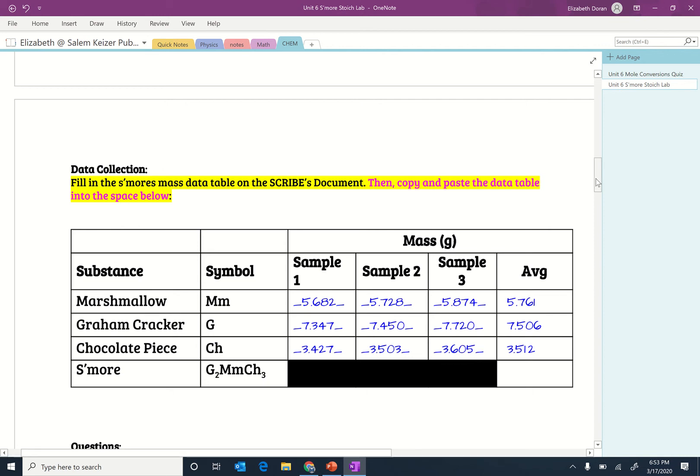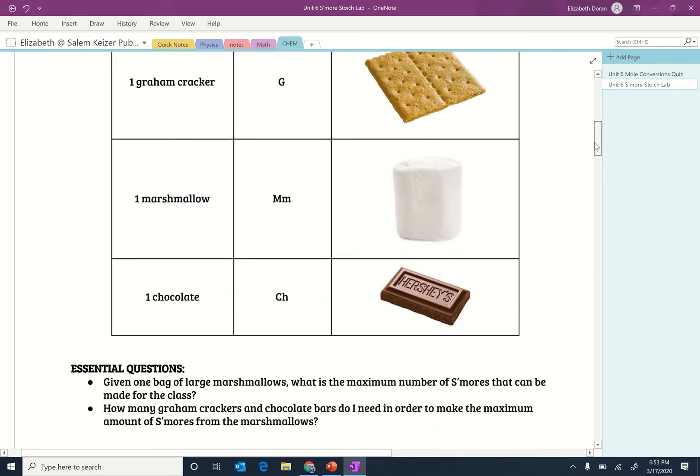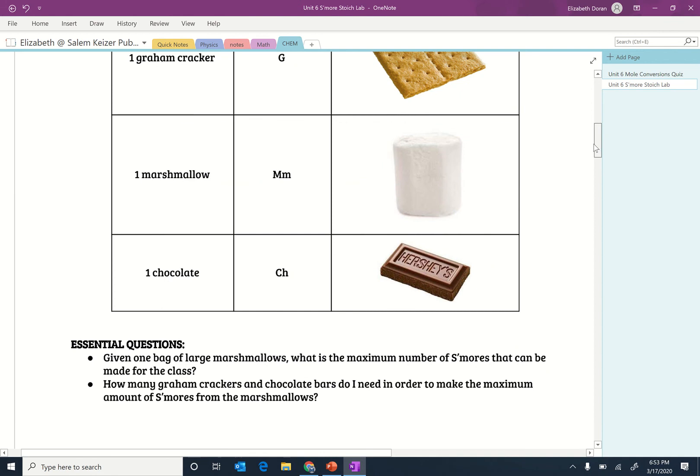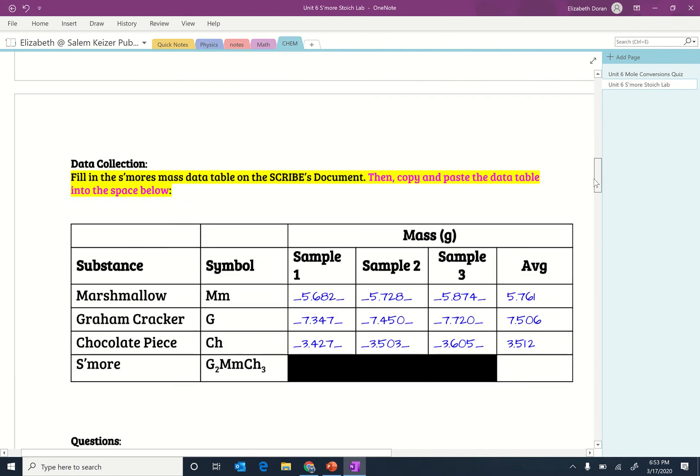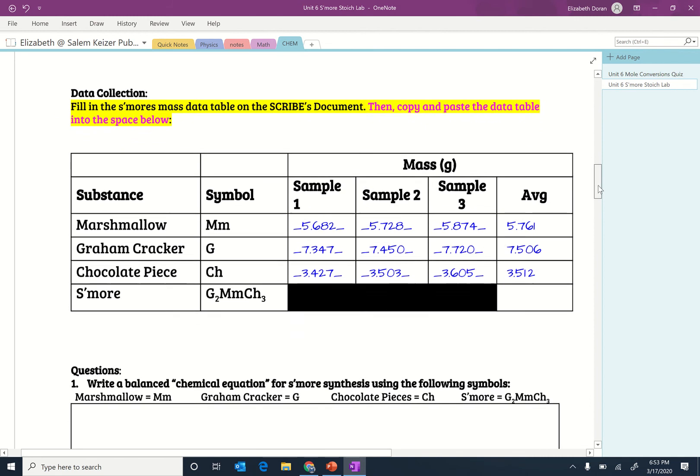And then the chocolate pieces were the smallest little pre-cut little chocolates. So you had three of those, you took the mass and found the average.